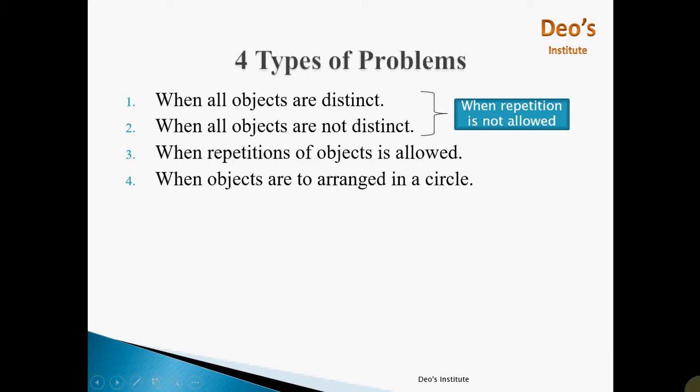Basically, there are 4 types of problems asked from permutation. First is when all objects are distinct. Second is when all objects are not distinct — in this case it is considered whether repetition of the object is allowed or not. Third case is when repetition of the object is allowed. And fourth is when objects are to be arranged in a circle. Out of which the first method is very common, so in this video we will only focus on the first method, that is when all objects are distinct. In my next video on permutation, we will focus on the rest of the three categories.